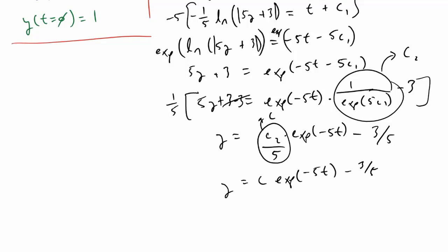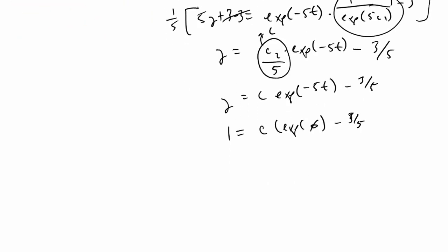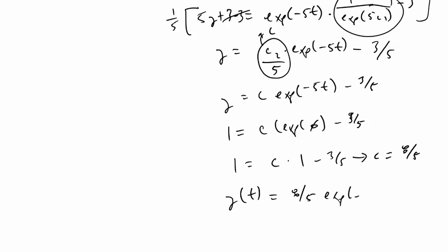Now I'm going to make use of knowing the initial conditions. Because we know that at time 0, y is equal to 1, I will plug in 1 for y, giving us 1 = c * e^(5 * 0) minus 3/5, which simplifies to 1 = c * 1 minus 3/5. Therefore c must be equal to 8/5.